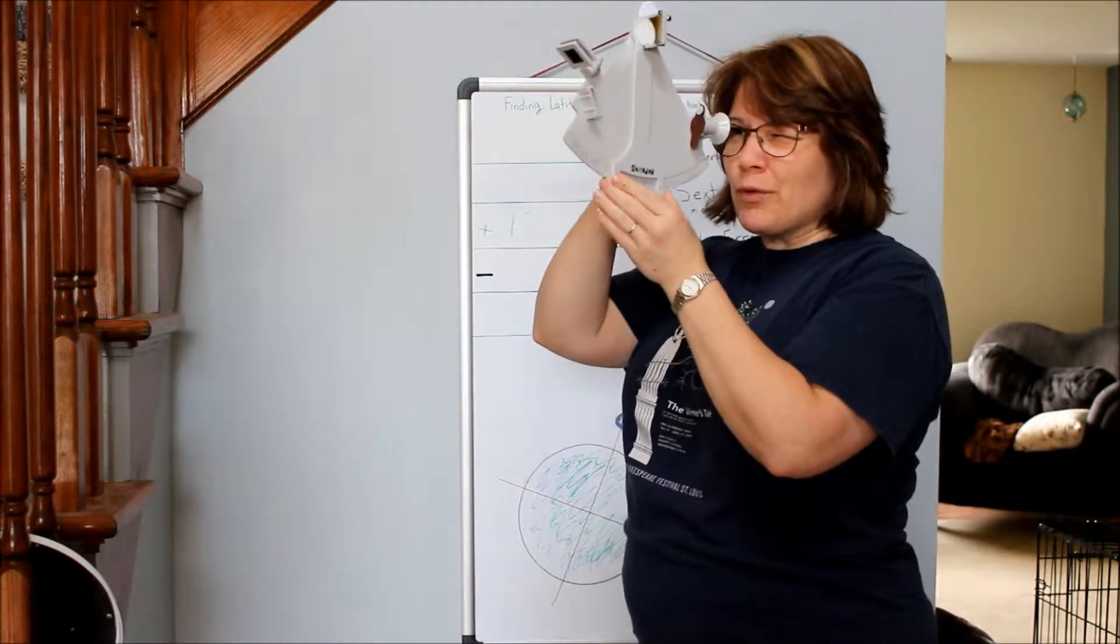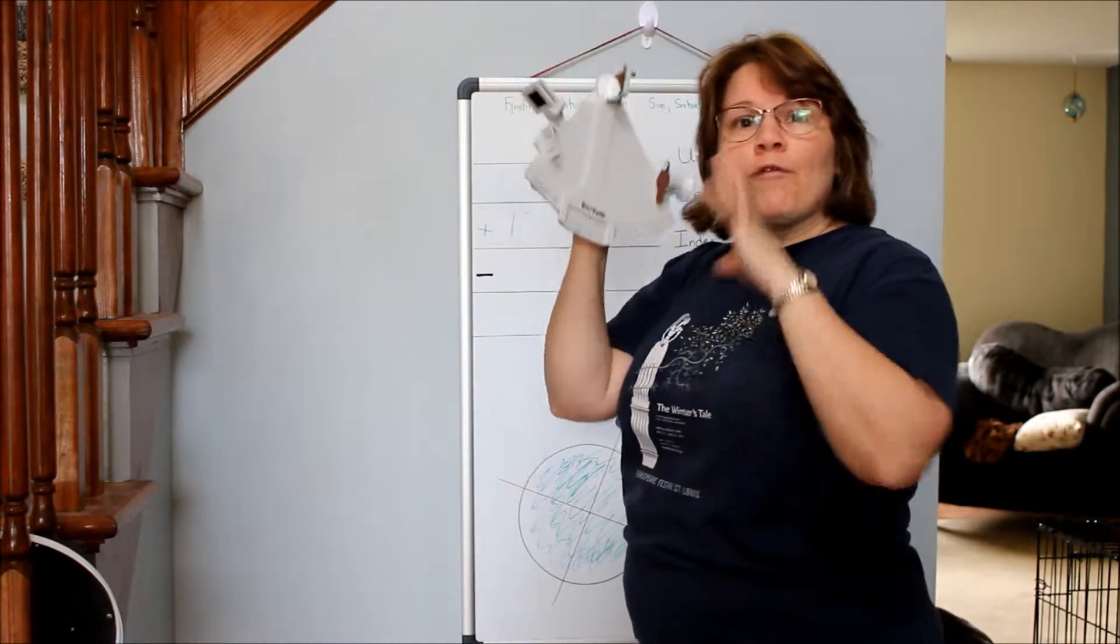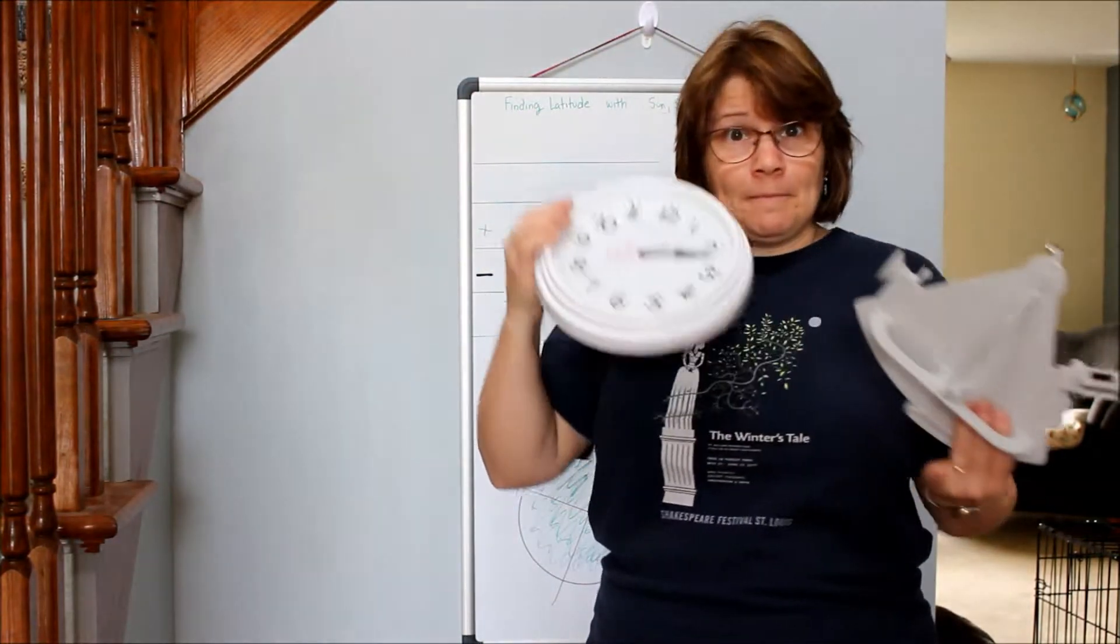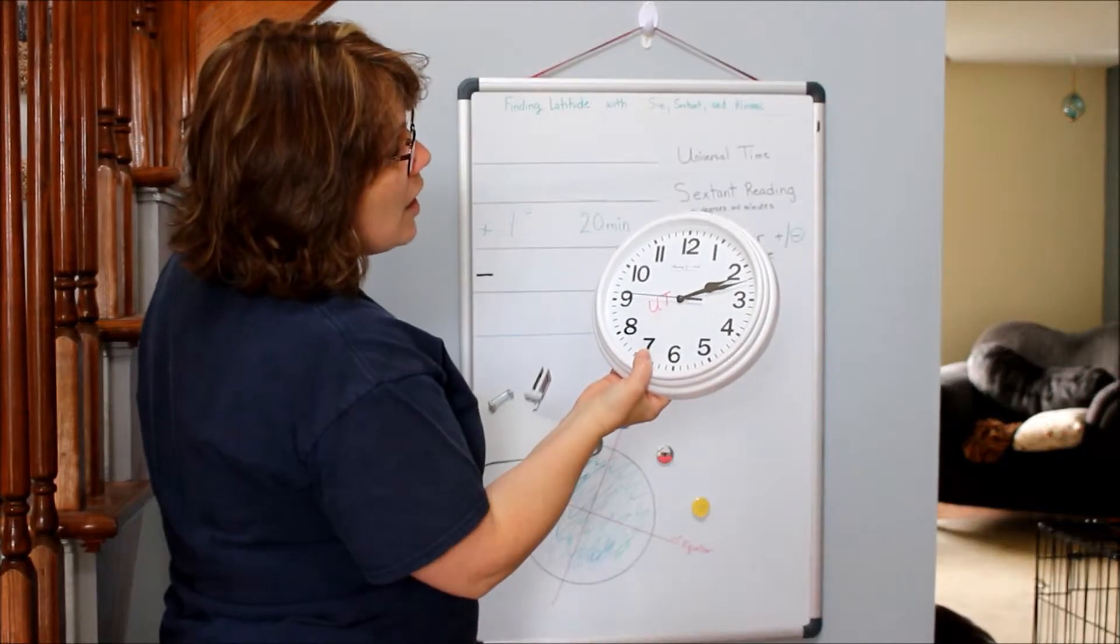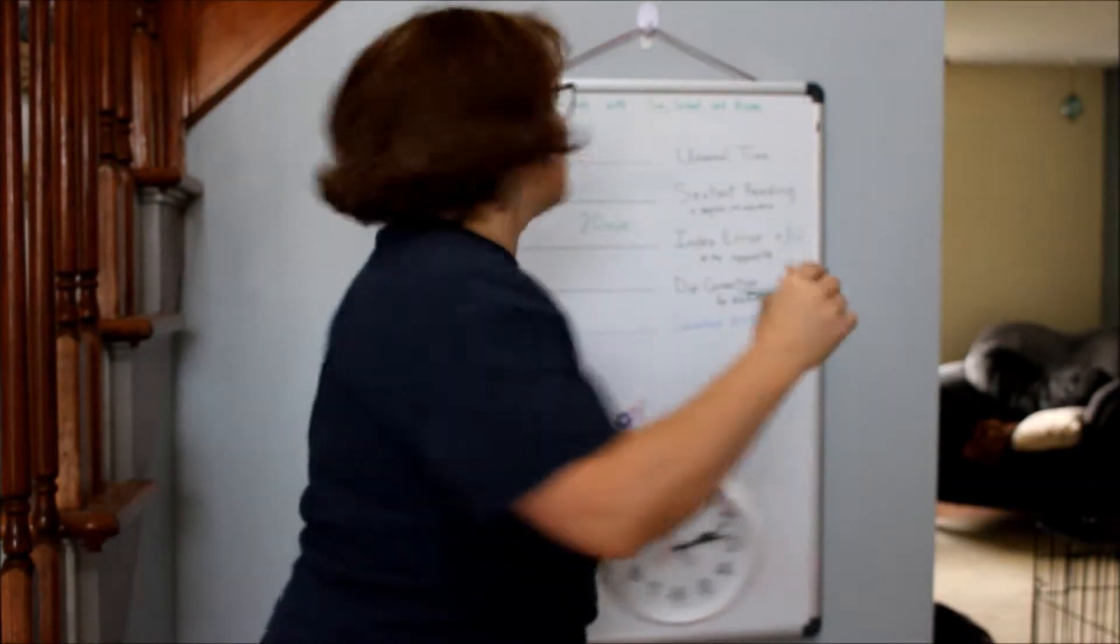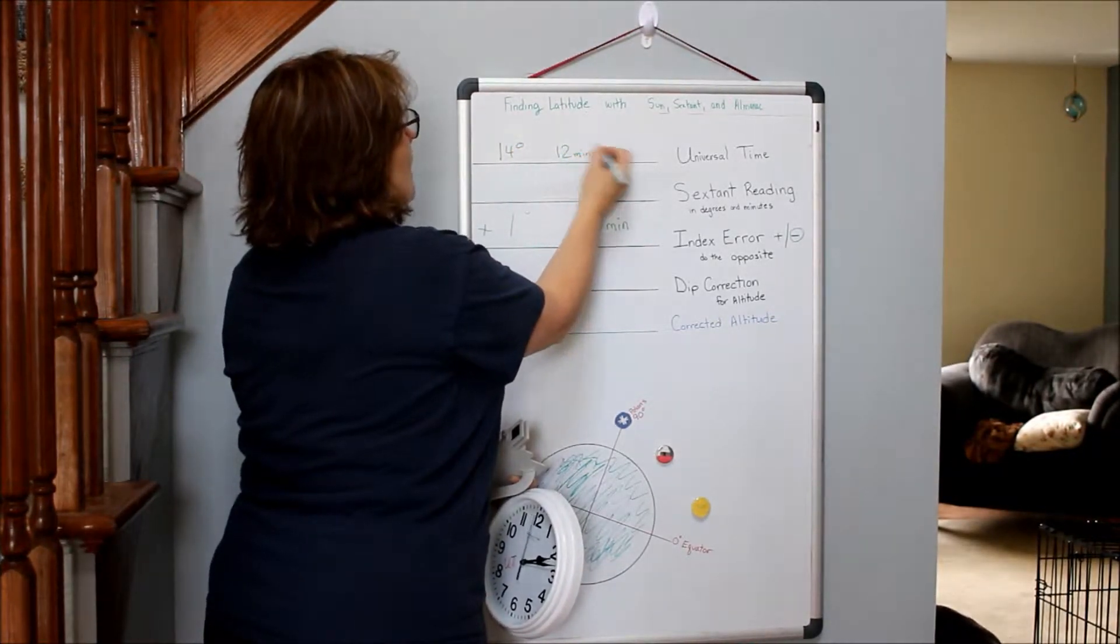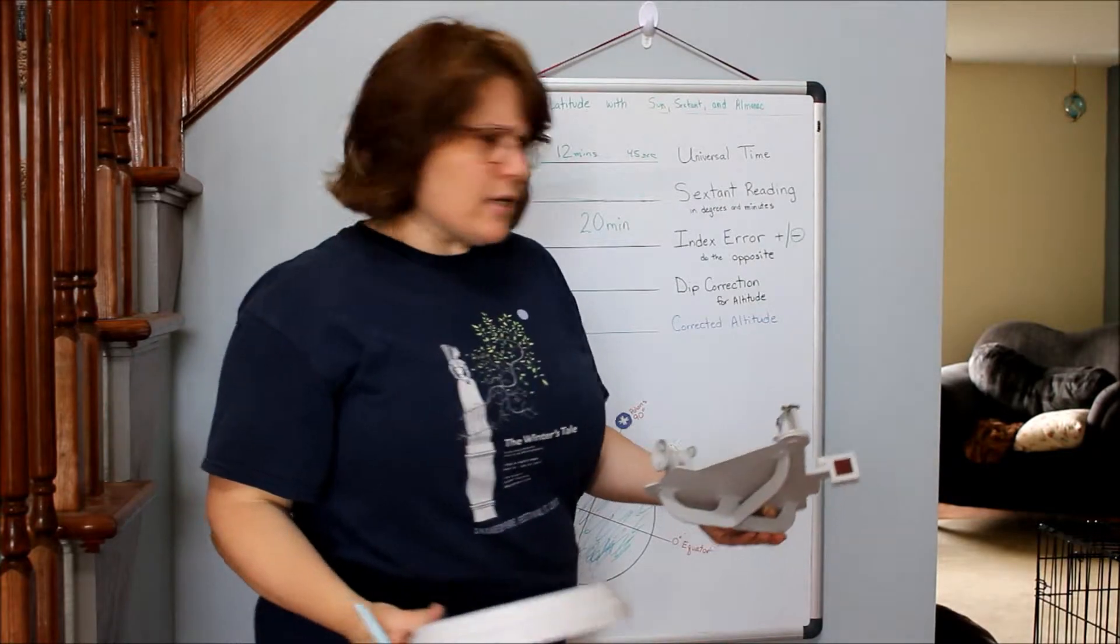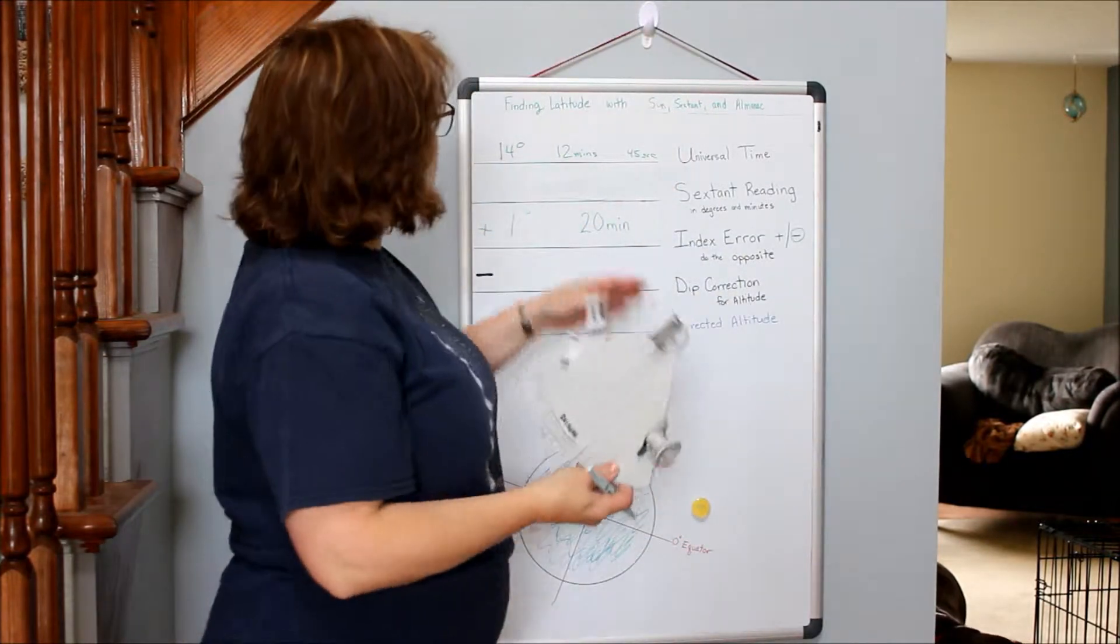Now we found our index error, so it's time to take our sextant reading. We're sighting our sextant, bringing the Sun down to the horizon, then swinging it so the bottom of the Sun hits our horizon beautifully. Before we do anything else with the sextant, we keep it really careful so it doesn't move or shift, and we immediately take our universal time clock and find out what the universal time is. In this case, we are going with 1400 hours, 12 minutes, and 45 seconds.